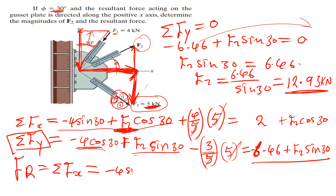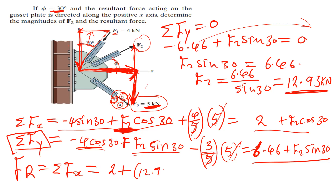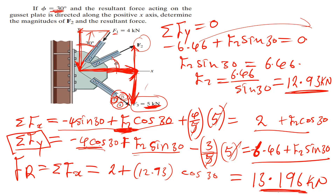The resultant equals 2 plus F2·cos30, where F2 = 12.93 kilonewtons. So: 12.93 times cos30 added to 2 gives us 13.196 kilonewtons. That is the resultant force, and 12.93 kN is the F2 they wanted us to find.